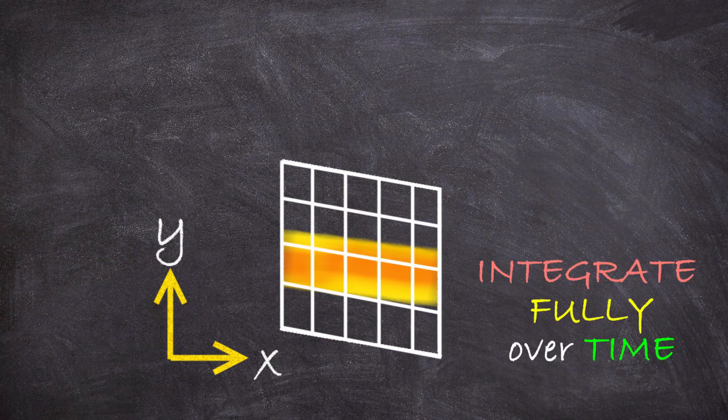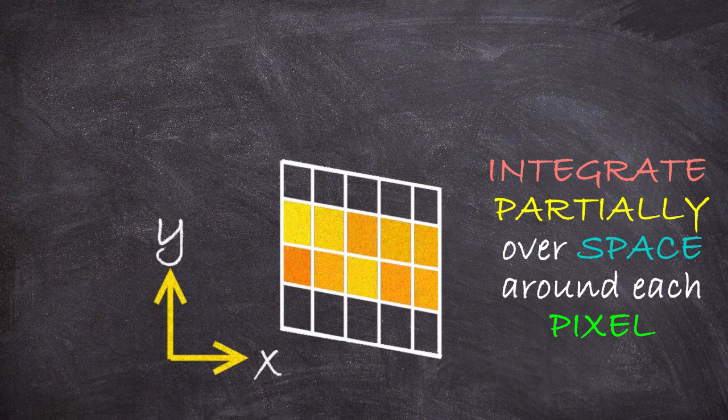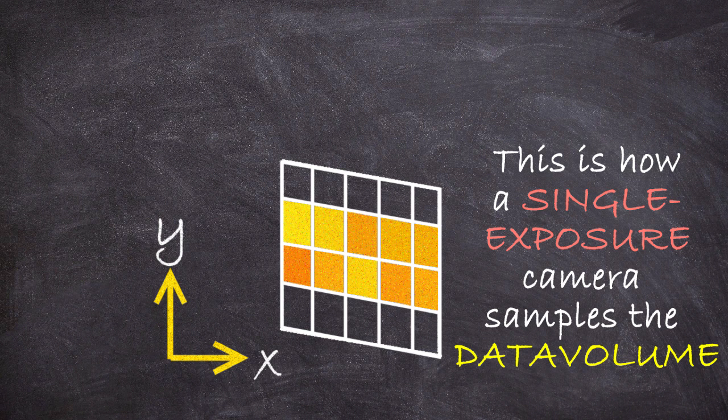So a single exposure image of a scene samples our hypothetical data volume by fully integrating over the time coordinate and then taking a finite number of x, y points, which are our pixels, and integrating in some neighborhood around them. That's the strategy it takes.